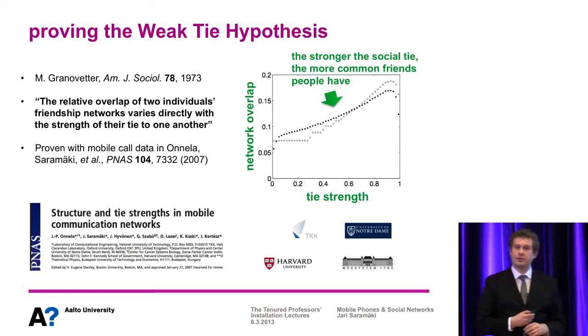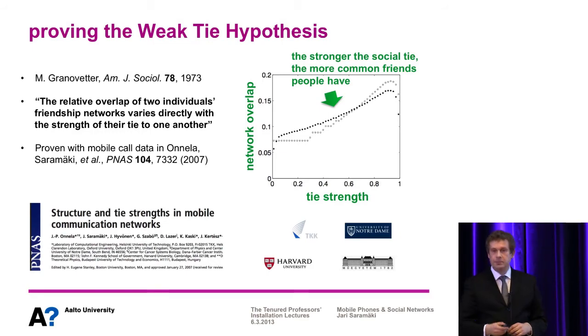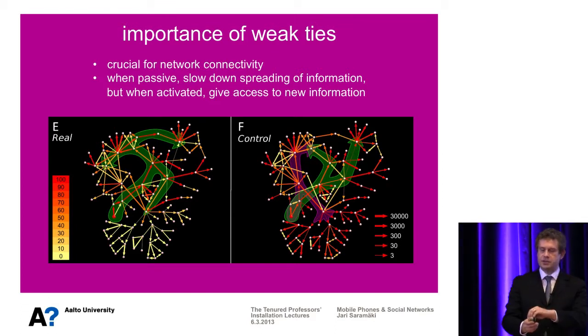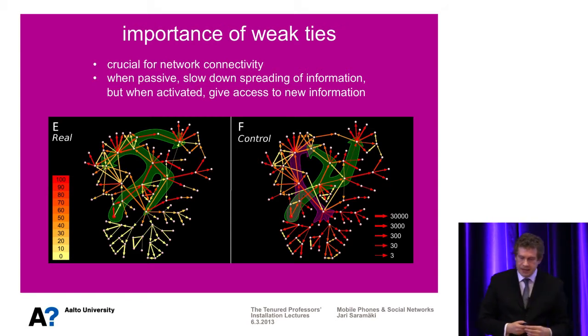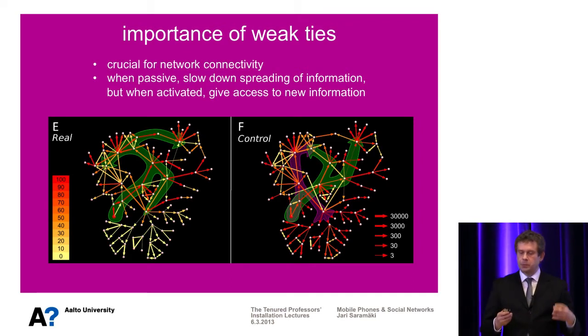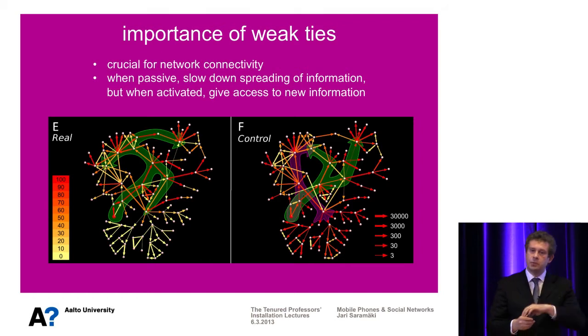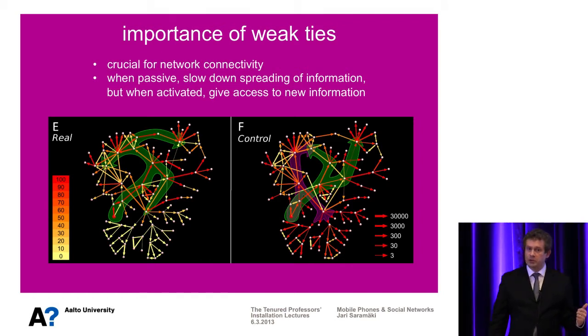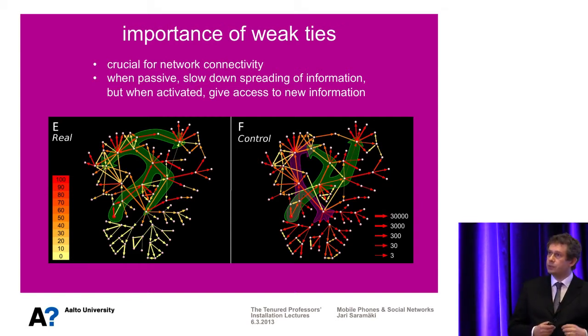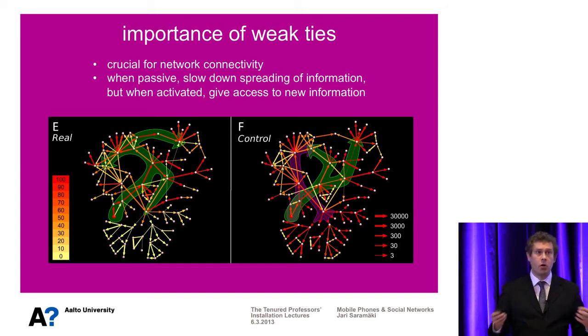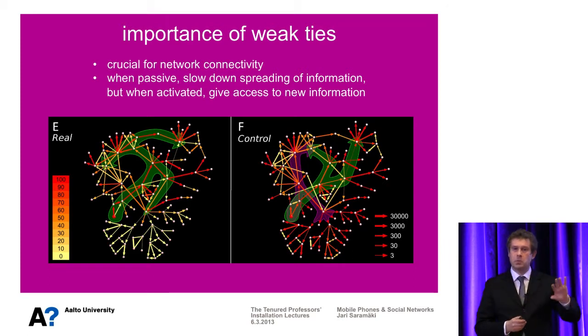We provided the first proof of this hypothesis back in 2007 with big data: the stronger a social tie, the more common friends people have. It's a bit like a law of nature regarding human behavior. This leads to some consequences — weak ties are not associated with very many shared friends, meaning they lead away from our ordinary social circles to more distant parts of the network. Because of this, weak ties are very important for network connectivity and for getting access to information. If you want to find out something new, call someone you haven't called in several months, because you probably already know the things your best friends know.